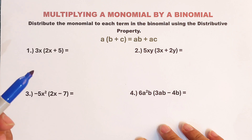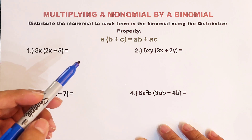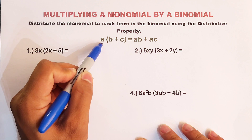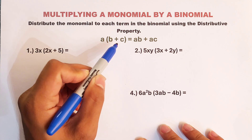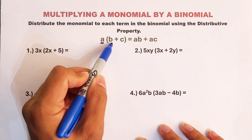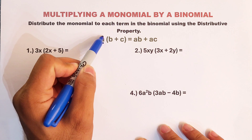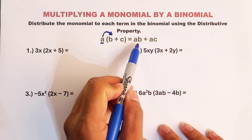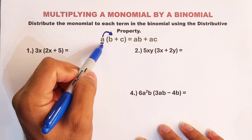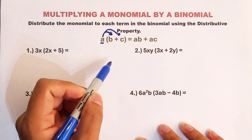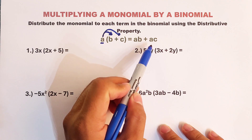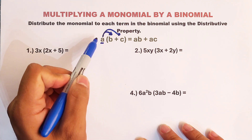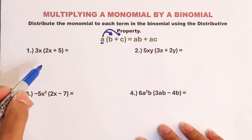To show you how the distributive property works, we have here the expression a times (b plus c). This is the monomial and this is the binomial. We will distribute — multiply a to each term: a times b gives a product of ab, and a times c gives a product of ac. As you can see, I have distributed the monomial to the terms of the binomial.